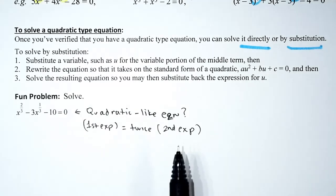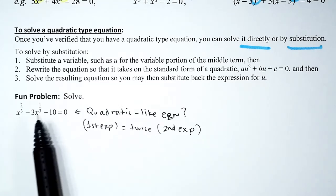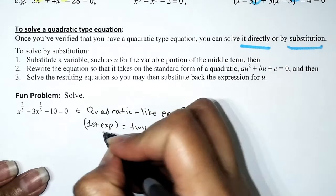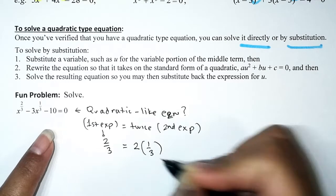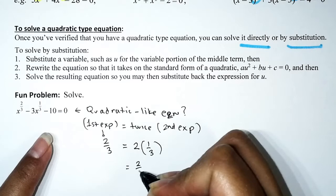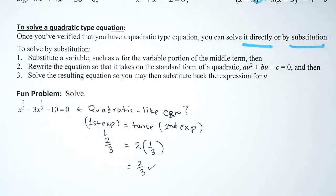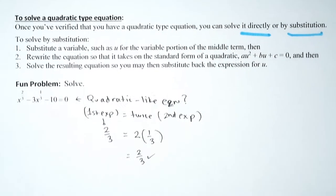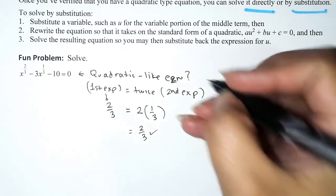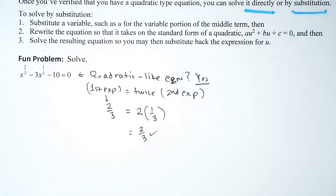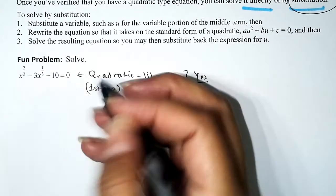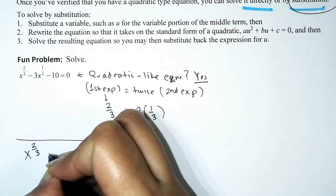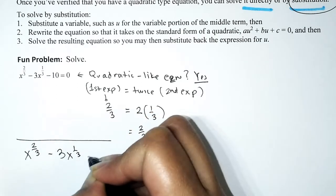Is this a quadratic-like equation? The first exponent is two-thirds. Is two-thirds twice the second exponent, which is one-third? The product of two and one-third gives us two-thirds. So yes, the first exponent is twice the second exponent, meaning we do have a quadratic-like equation.